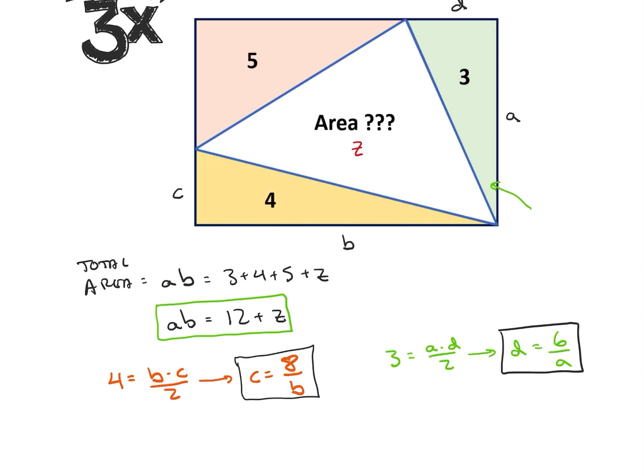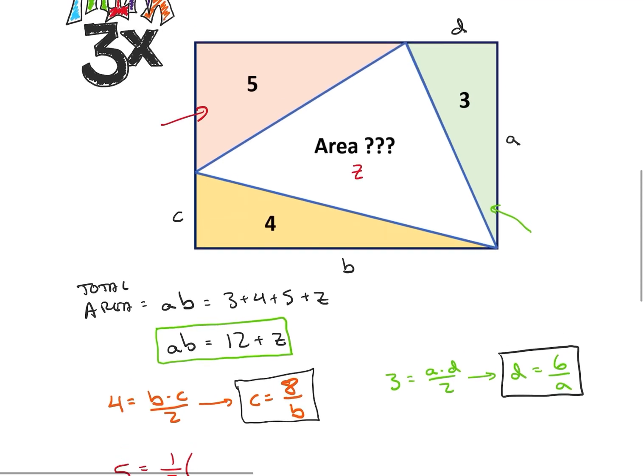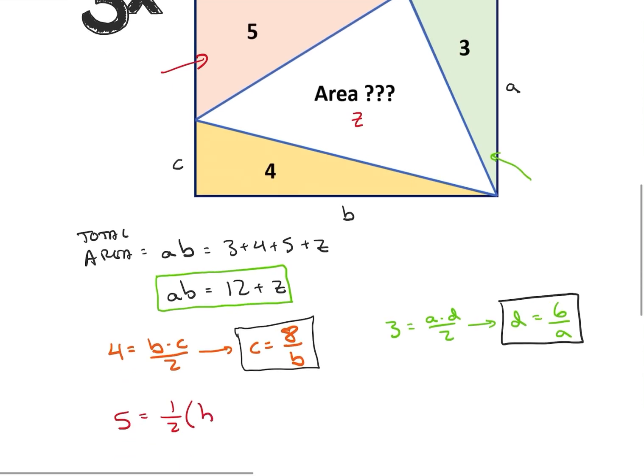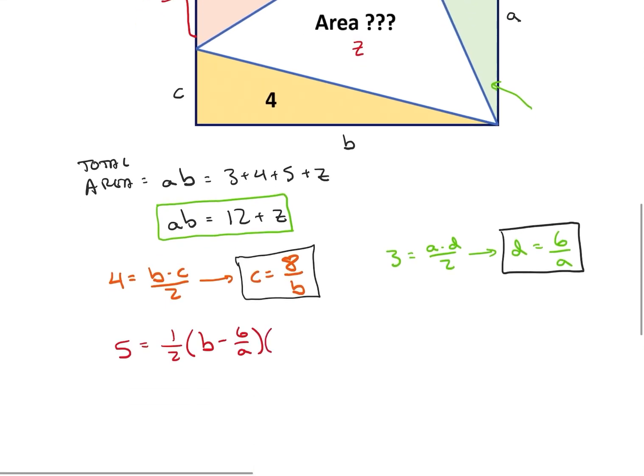So let's look at my last information that I know. So from the last one, I have five. So that area is five. And that's going to be equal to one half my side length. So this side length up here is going to be B minus D, which is B minus six over A. And then on the left side, I'm going to have this length, which is going to be equal to A minus C. So I'm going to have A minus C, which is eight divided by B.